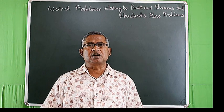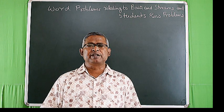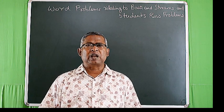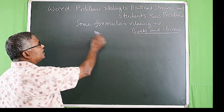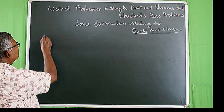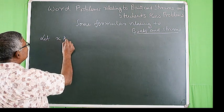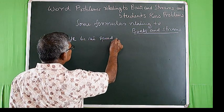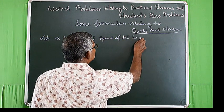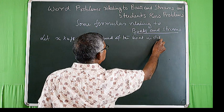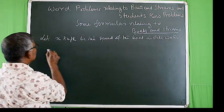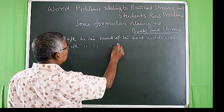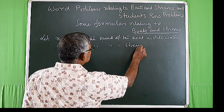Hi students, let us learn how to solve boats and streams problems and row problems with the help of algebraic equations. Let us learn some formulas relating to boats and streams. Let x kilometer per hour be the speed of the boat in still water and y kilometer per hour be the speed of the stream.